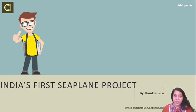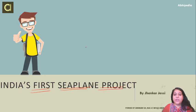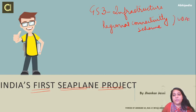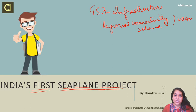Hello, welcome to Obipedia powered by Abhimanyu IES. Today we are going to discuss India's first seaplane project, called the JS3K Seaplanes. It talks about infrastructure. We are going to discuss in detail the Regional Connectivity Scheme, what is Udaan, the seaplane project, its environmental impact, some routes, and which ministry takes care of this project. So let's discuss in detail.